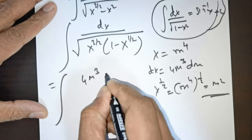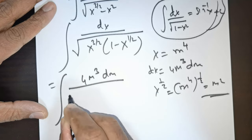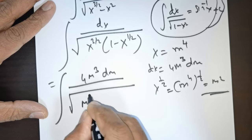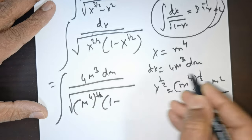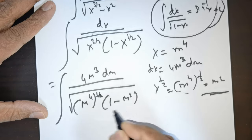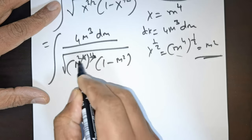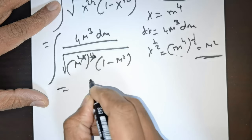I get 4m to the power of 3 dm divided by root of, in place of x, m raised to power of 4. There's a 3/2 there. Substitute that and this gives me m squared. Now 2 will divide this 2 times, so 2 times 3 is 6.